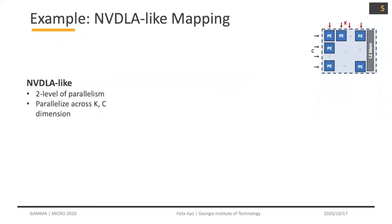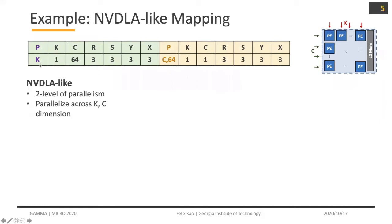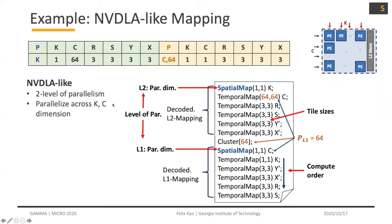Now let's look at an example of NVIDIA-like mapping. NVIDIA-like is a two-level parallelism, and it parallelizes across the K and C dimensions. When translated into the mapper directly, it parallelizes the cross-K-C dimension. The cluster size is 64, and the tile size is reflected here. The upper cluster and lower cluster are expressed by the L2 mapper and L1 mapper.